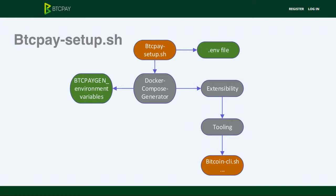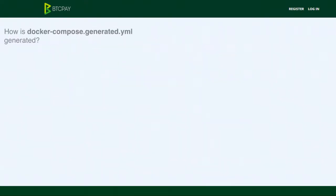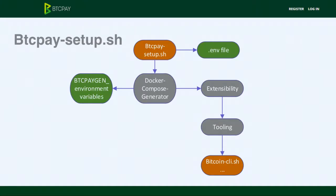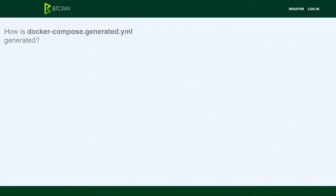The btcpay-setup.sh generates an environment file and runs the Docker Compose generator. After installing Docker and Docker Compose, we run the Docker Compose generator. What does it do? It generates a Docker Compose file. For those who don't know what Docker Compose is, it's a description of all the services you want to run — with one line of code you run them all and connect them together. It's like infrastructure-as-code in one configuration file.